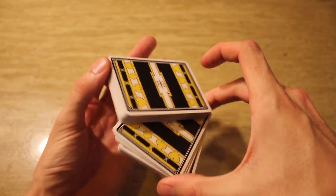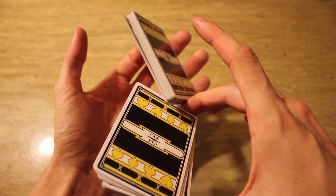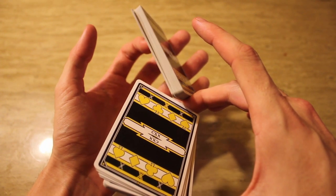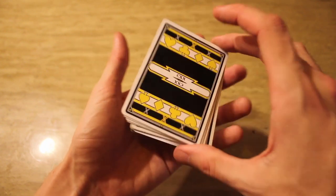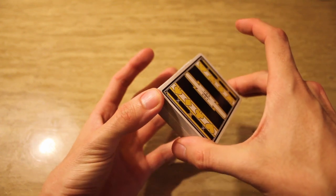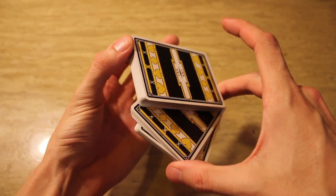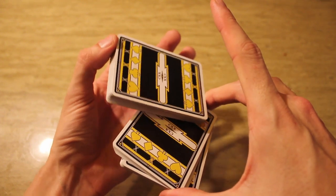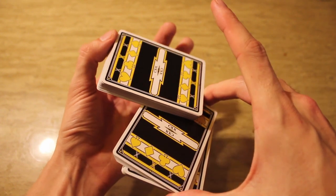My index finger is staying underneath the packet for balance. Other than that, as the swing comes over, this index finger catches underneath, still rotating around the middle finger.